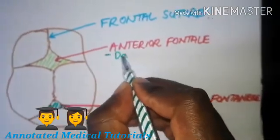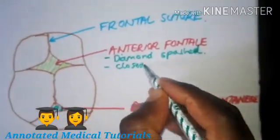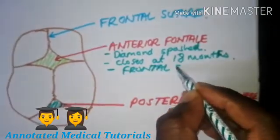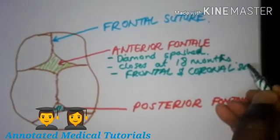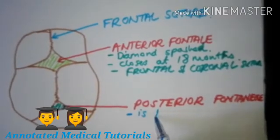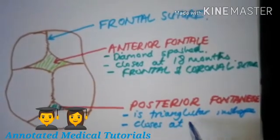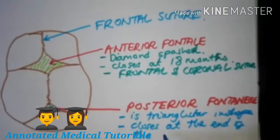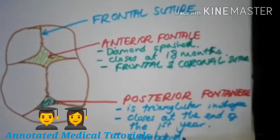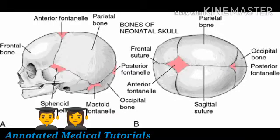These two fontanels are the ones of major clinical significance in pediatrics. The anterior fontanel is diamond-shaped and closes 18 months after birth; it is bound between the frontal and the coronal bones. The posterior fontanel is triangular in shape — its base is posterior and its apex is anterior — and it is usually closed by the end of the first year. It is found between the lambdoid suture and the sagittal suture.